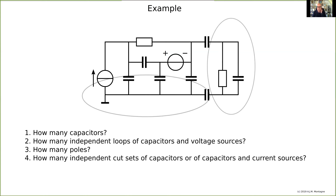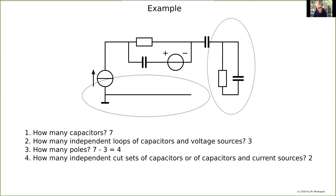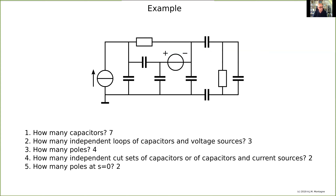How many independent cut sets do I have? A cut set is when you remove a number of branches and it gives you an isolated sub-network. We have three possibilities here — if I remove those branches I have three isolated networks. The rule says: how many elements do I have to place back in the network before I have a tree? That's only two: I place back the current source and the capacitor, and now all nodes are connected again. So I have two independent cut sets of capacitors or capacitors and current sources, which means two poles in the origin — four poles total and two poles in the origin.